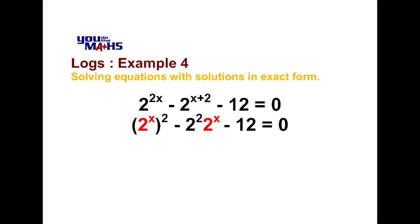And the benefit of that is we now can rewrite this expression like a quadratic. If we let some arbitrary letter a equal 2 to the x, we can see that our equation becomes a squared minus 4a minus 12 equals 0. It's a quadratic equation and we can solve this with factorization.